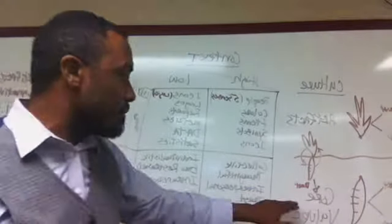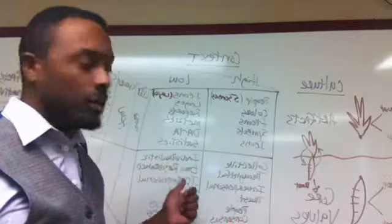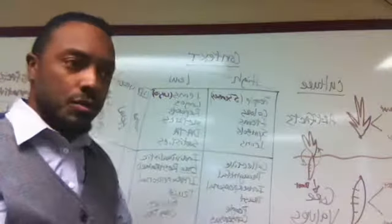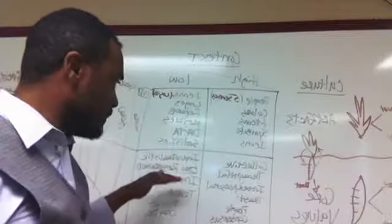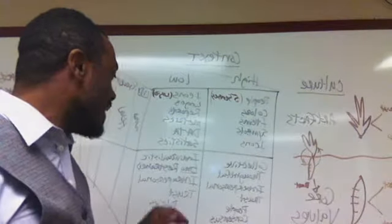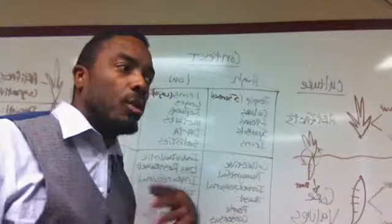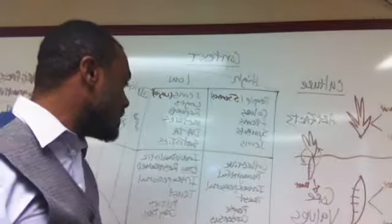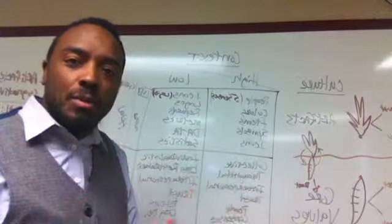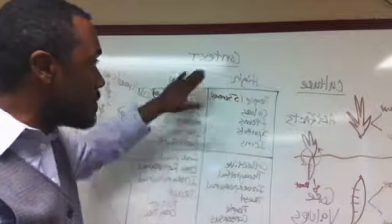We also know about low context core values: rugged individualism — the individual's contribution to the whole — is extremely important and valued. People operating from low context are typically emotionally restrained in terms of core values. When people get heated or emotional, it can be a hurdle for those who operate from a low context point of view. Intrapersonal relationships — how we work across groups — become important. Trust is built or sustained by policies and organizational development. These are generalizations in terms of how to talk about context.